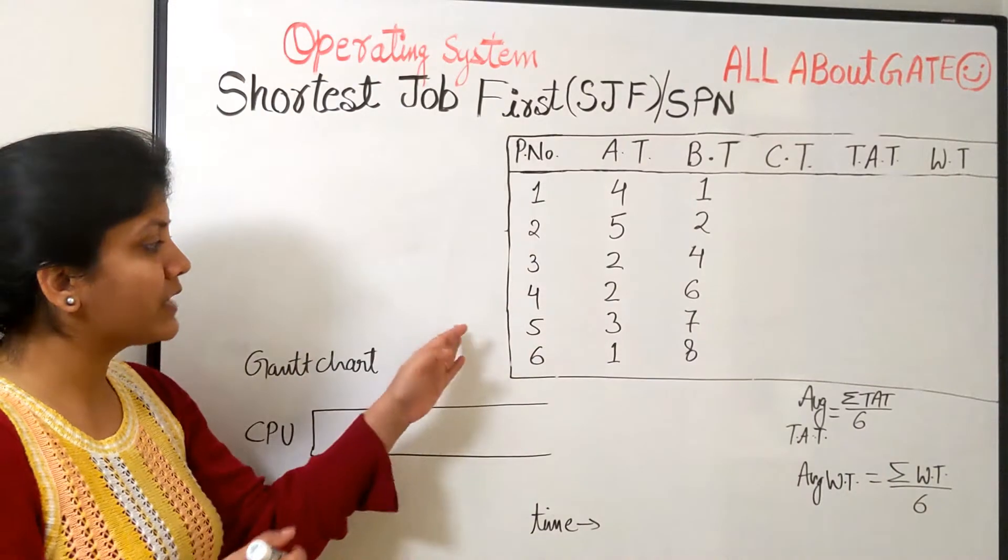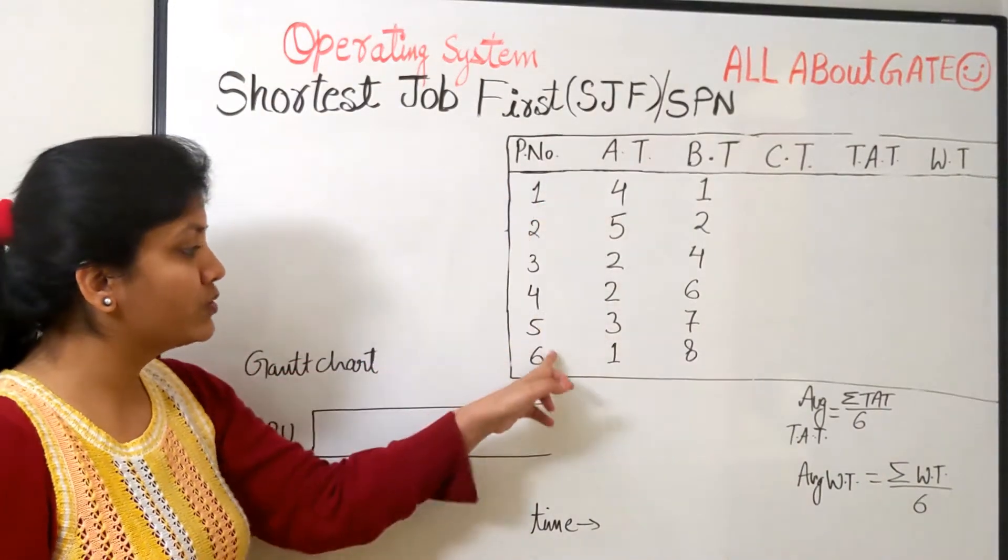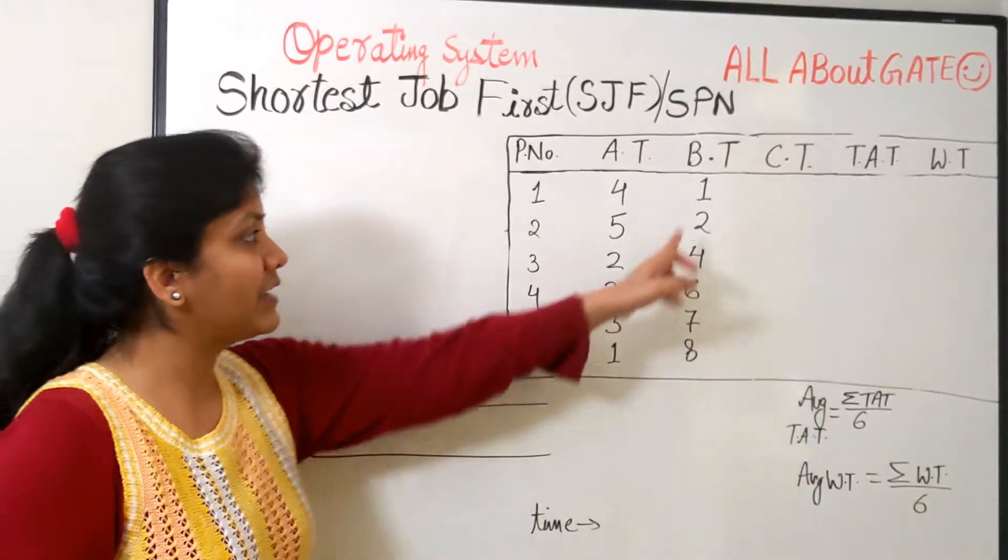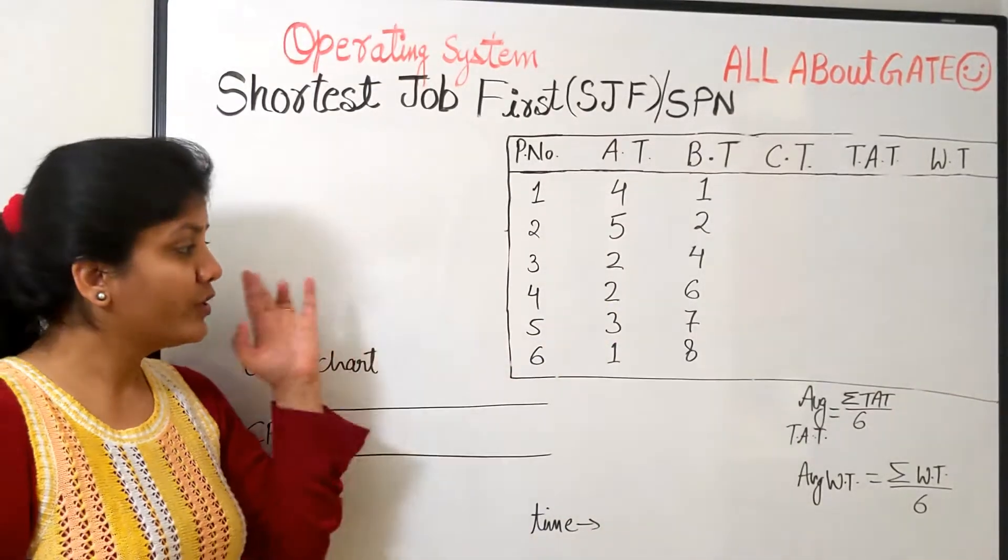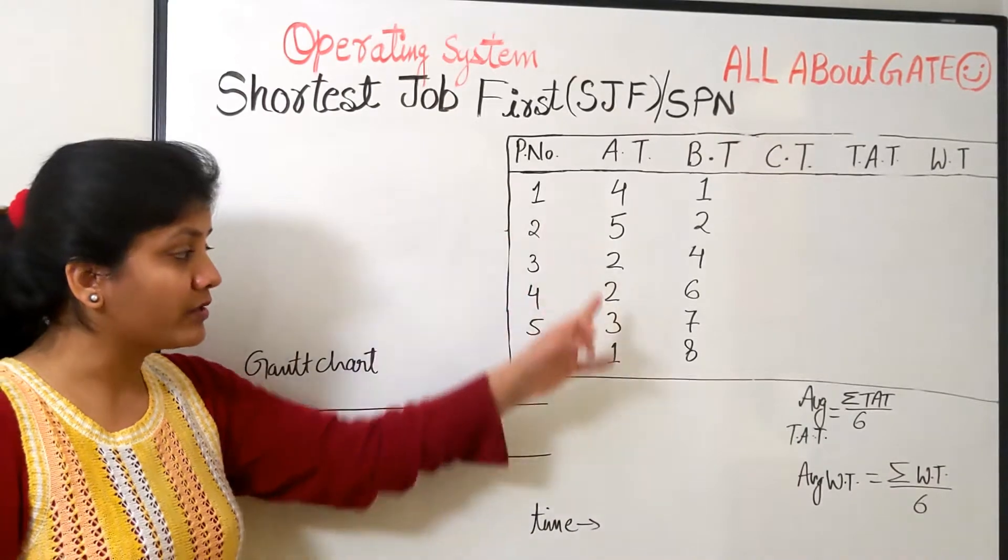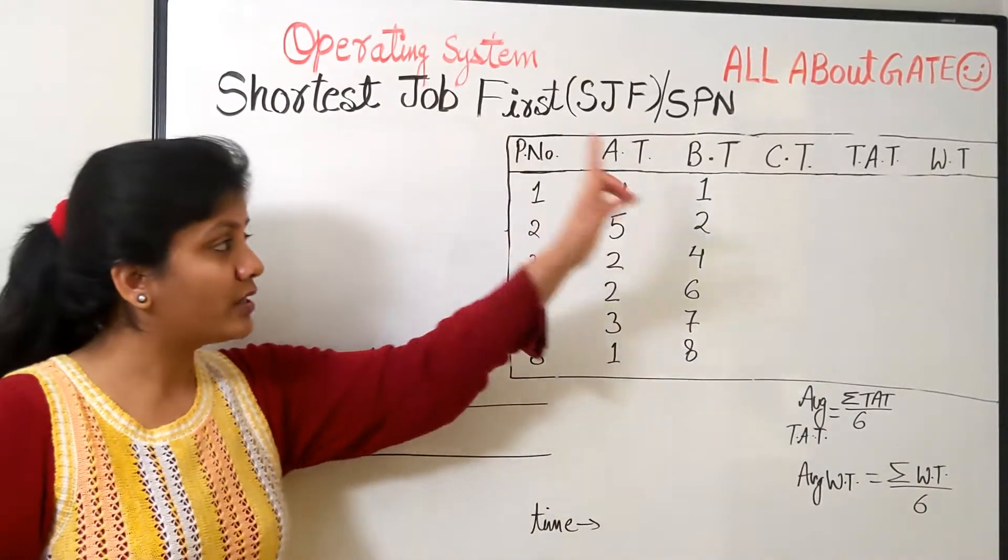So let's take this question right here. We have process 1, 2, 3, 4, 5, 6, the respective arrival time and the respective burst time which we are going to schedule right away. Before we go ahead with this video, I would like you to solve this all by yourself. Get all the values, schedule it completely and then come back to check how we are going to schedule it.